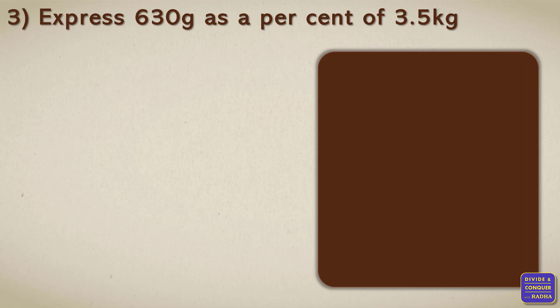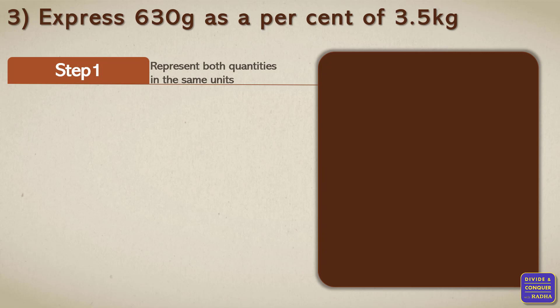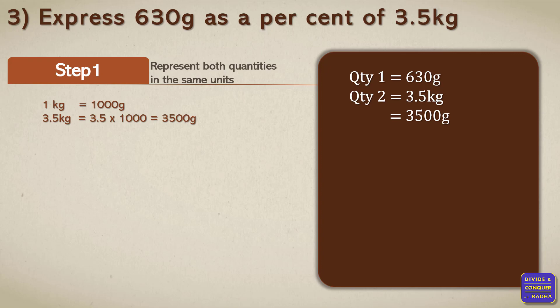Moving on to the third sum: express 630 grams as a percent of 3.5 kg. Step one, we need to represent both quantities in the same units. The first quantity is 630 grams and the second quantity is 3.5 kg. We need to convert the second quantity to grams. As per metric conversion, 1 kg is equal to 1000 grams, therefore 3.5 kg is equal to 3500 grams.